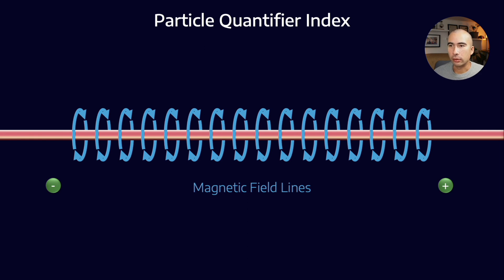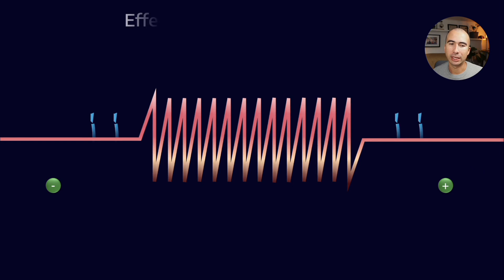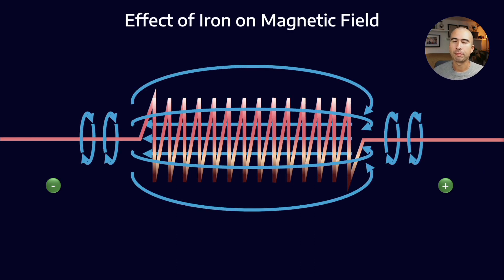These are magnetic field lines, and if we bend this wire into a coil, then those magnetic field lines are kind of additive, and they're going to form what is effectively a bar magnet with a north and a south pole.